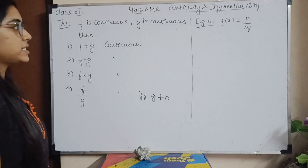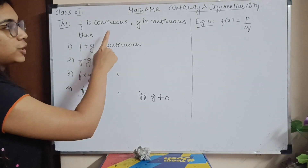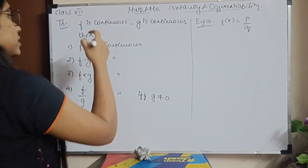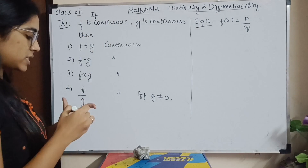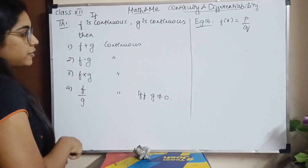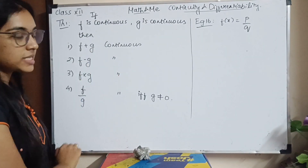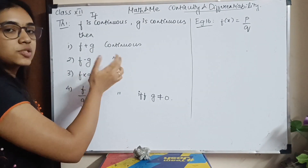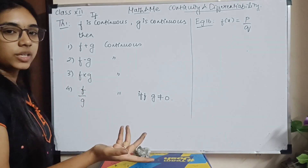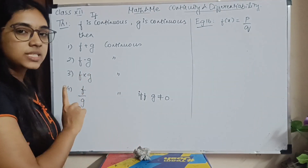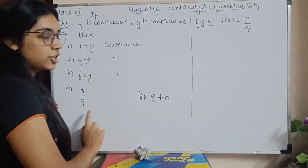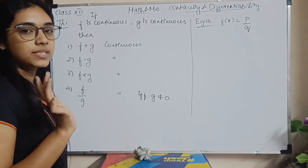Theorem 1 states that if f is continuous and g is continuous, then the sum of the two functions is also going to be continuous, the difference is going to be continuous, the product is continuous, and the division is continuous — but division is continuous under one condition: the denominator should not be zero.